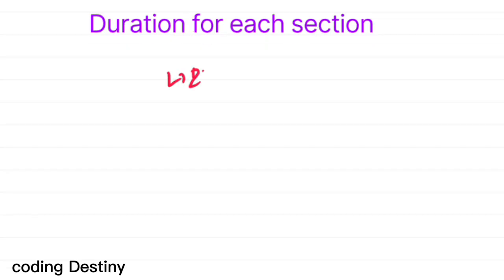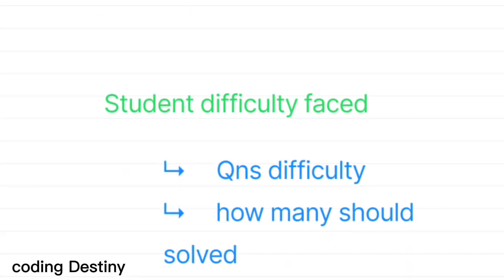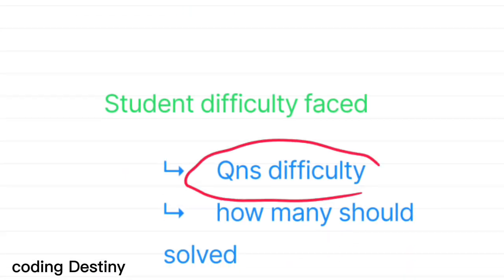Practice with time-based conditions only — that is how you can crack this assessment. The cutoff for this assessment is 12 to 15 correct questions; you need to get that many correct to qualify for the further round. Each session is an elimination round, so once you get a higher cutoff you move to the next round. Most students stated that pseudo code questions are a little bit difficult, and you should aim to solve 12 to 15 questions correctly.